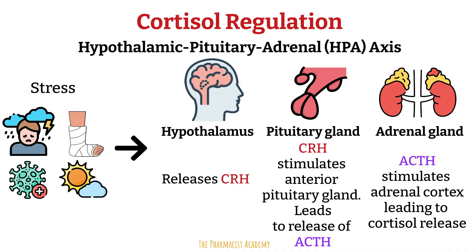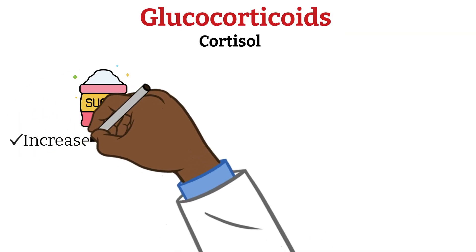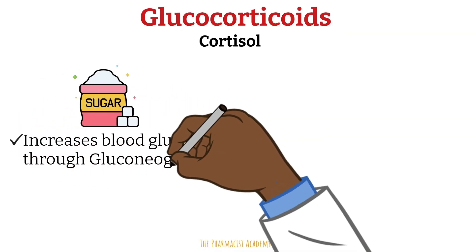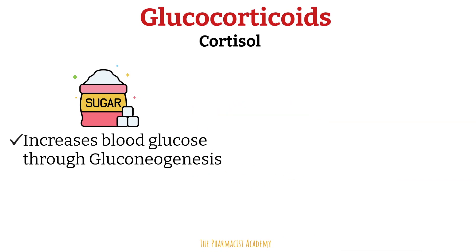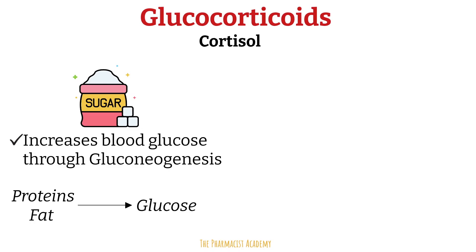Once cortisol is in the bloodstream, what does it do? First, cortisol increases blood glucose levels through a process known as gluconeogenesis — the metabolic process by which the body produces glucose from non-carbohydrate sources like proteins and fat. Because cortisol is a stress hormone, its goal is to prepare the body for stressful situations by ensuring a readily available energy source like glucose is in the bloodstream.